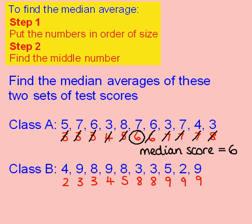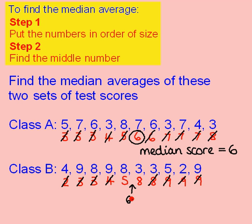The second one is slightly different. When I start crossing them off it's fine, but as I get towards the middle, I see that I'm left with two numbers. If you get this situation, what you need to do is find the middle of these two numbers. If you can't do it in your head easily, the best way is to say 5 add 8 is 13, and then half that, and we get a median of 6.5.